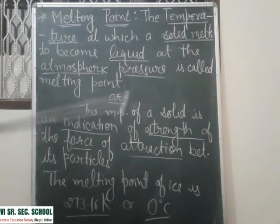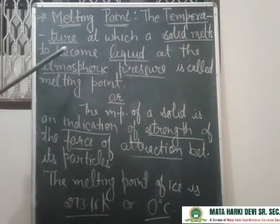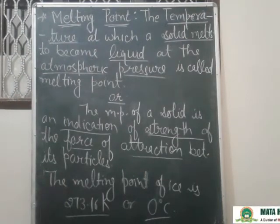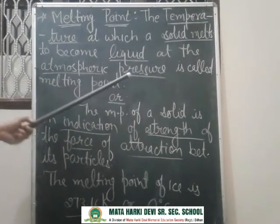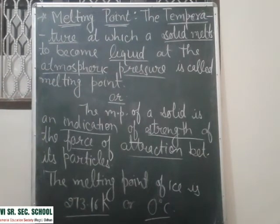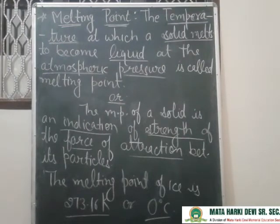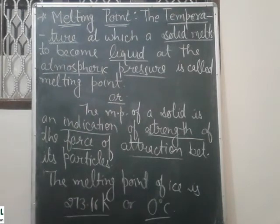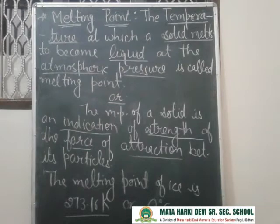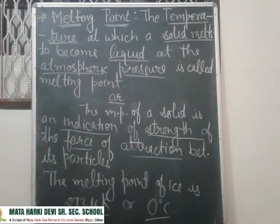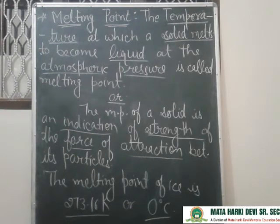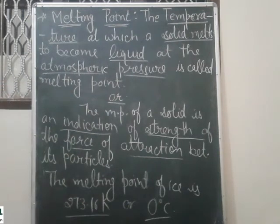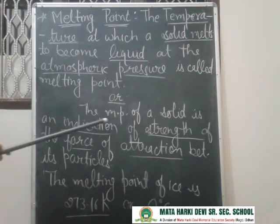Definition: The temperature at which a solid melts to become liquid — ऐसा temperature जिस पे solid melt होना शुरू हो जाए, पिघलना शुरू हो जाए, liquid बनने के लिए — at atmospheric pressure. Atmospheric pressure normal होना चाहिए; pressure ऊपर-नीचे हुआ तो temperature में change आ जाएगा और वो ज्यादा energy या heat demand करेगा अपने melting point पे पहुंचने के लिए। इसे melting point कहते हैं।